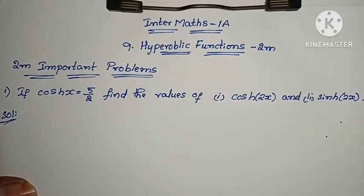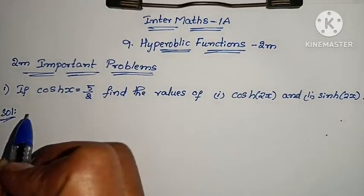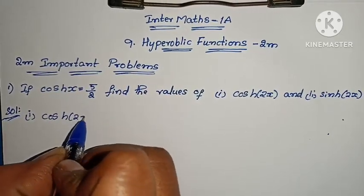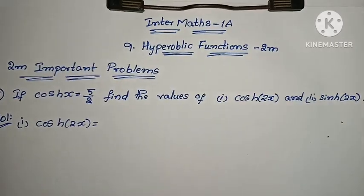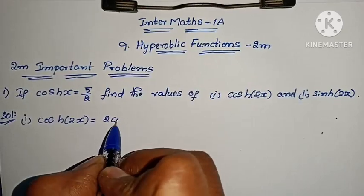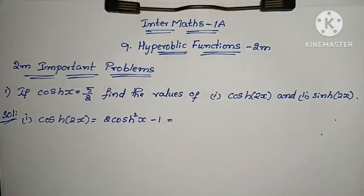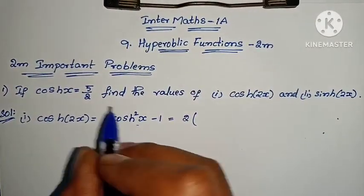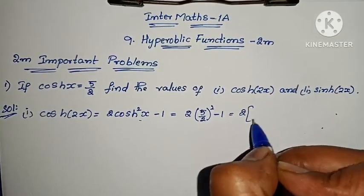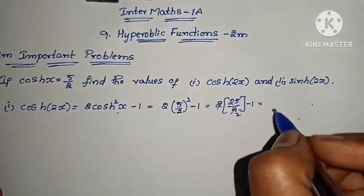If cosh(x) equals 5/2, find the value of cosh(2x) and sinh(2x). For cosh(2x), the formula is — similar to cos(2x) = 2cos²x − 1 — the hyperbolic version is: cosh(2x) = 2cosh²(x) − 1. So, 2 × (5/2)² − 1 = 2 × 25/4 − 1.